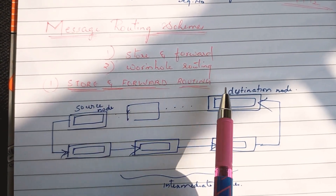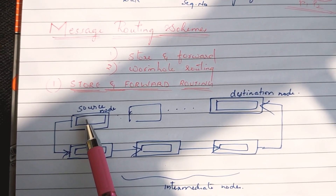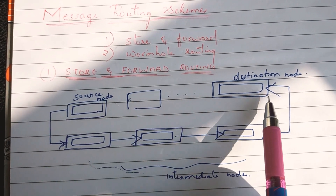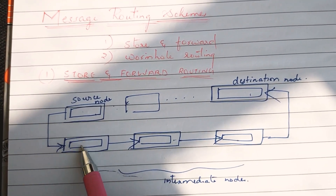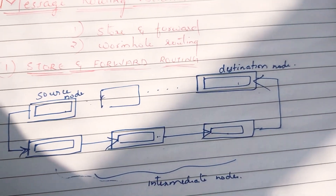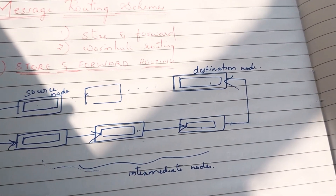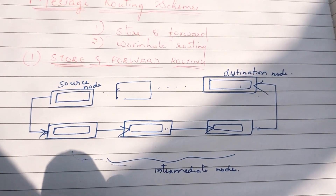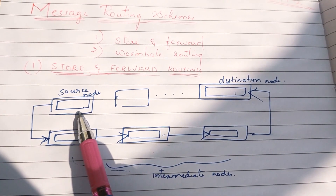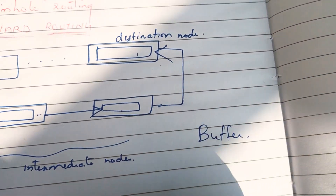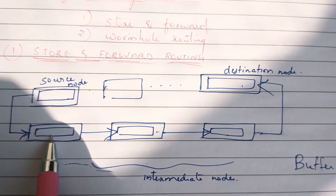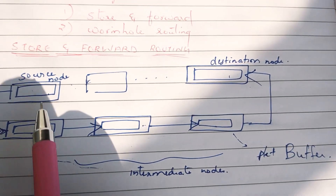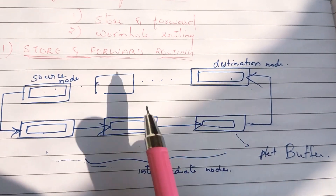In the store-and-forward routing scheme, we store and forward packets. There is a source node and a destination node, with intermediate nodes in between. This is the source node — we will transmit packets to the destination node through a sequence of intermediate nodes.